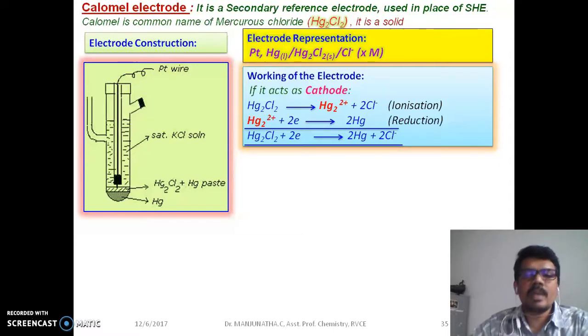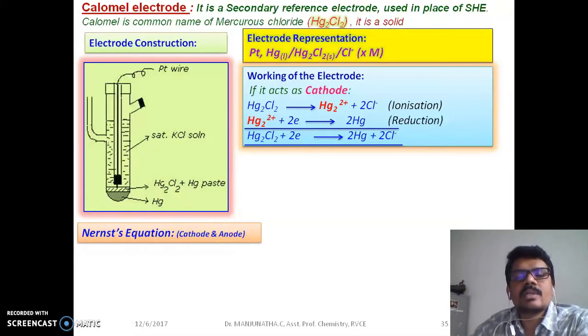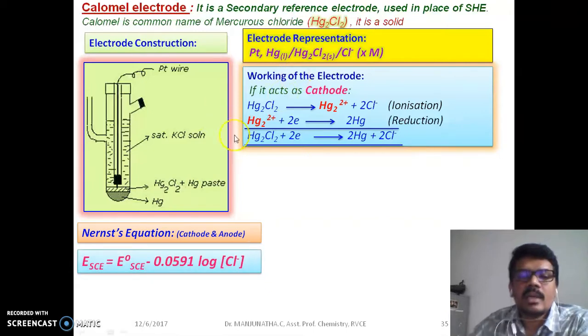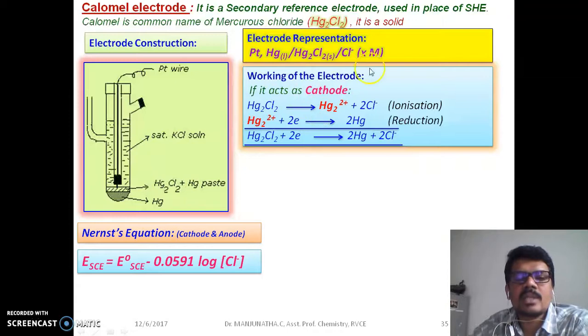This can also behave as anode if it is connected to other electrode which acts as cathode. Let us look at how the reactions are going to take place when it behaves as anode. Before that, let us define the Nernst equation when this calomel electrode behaves as cathode.